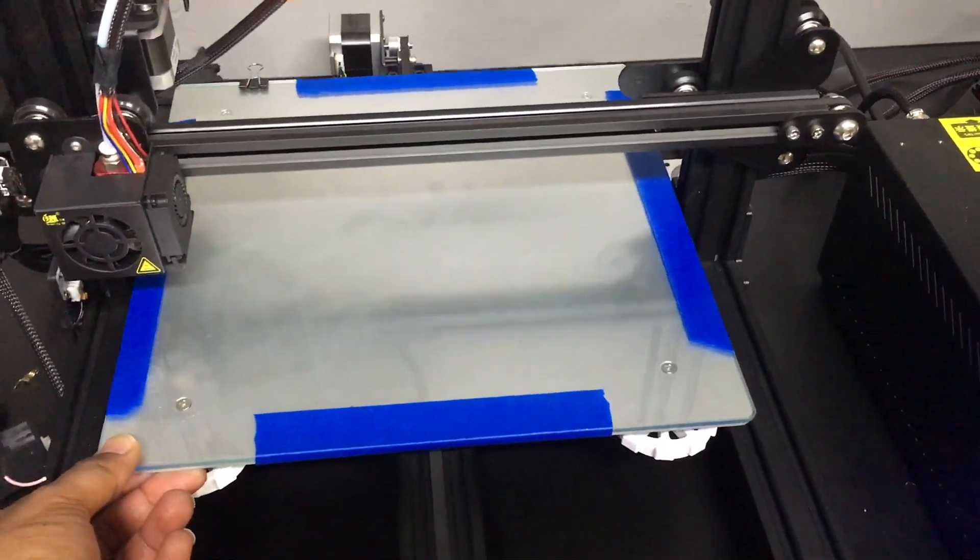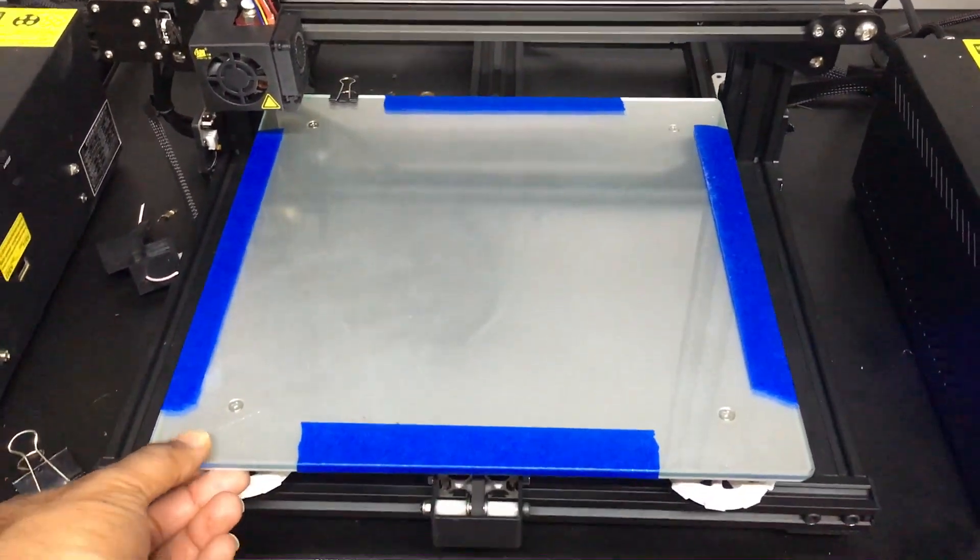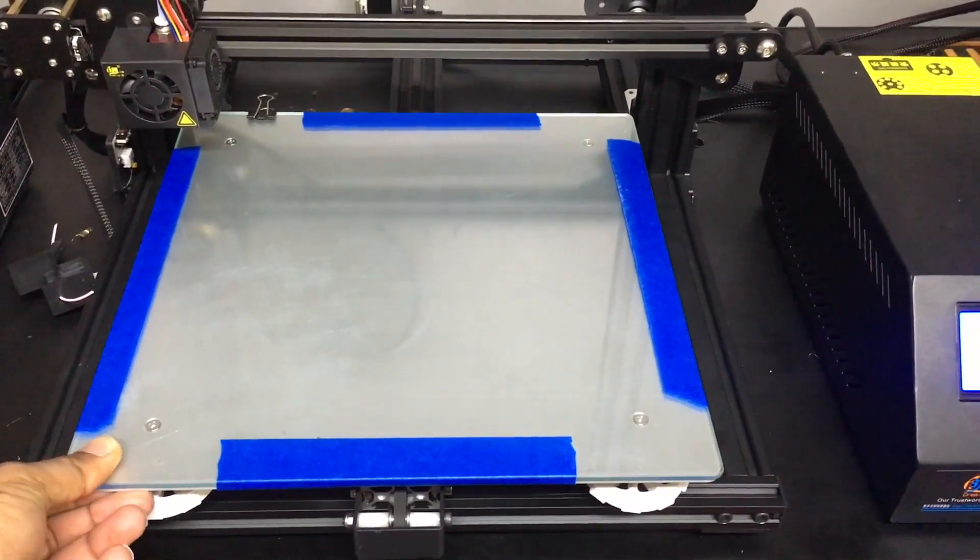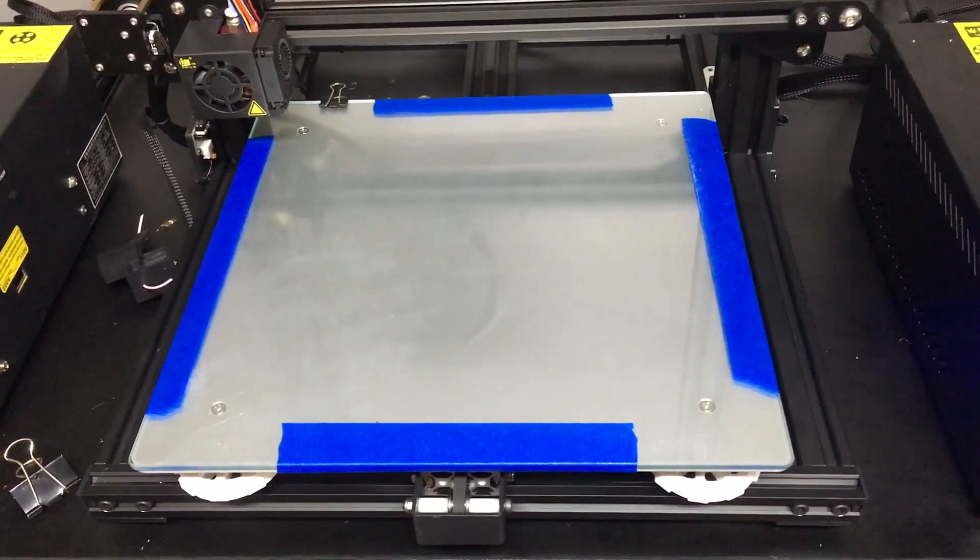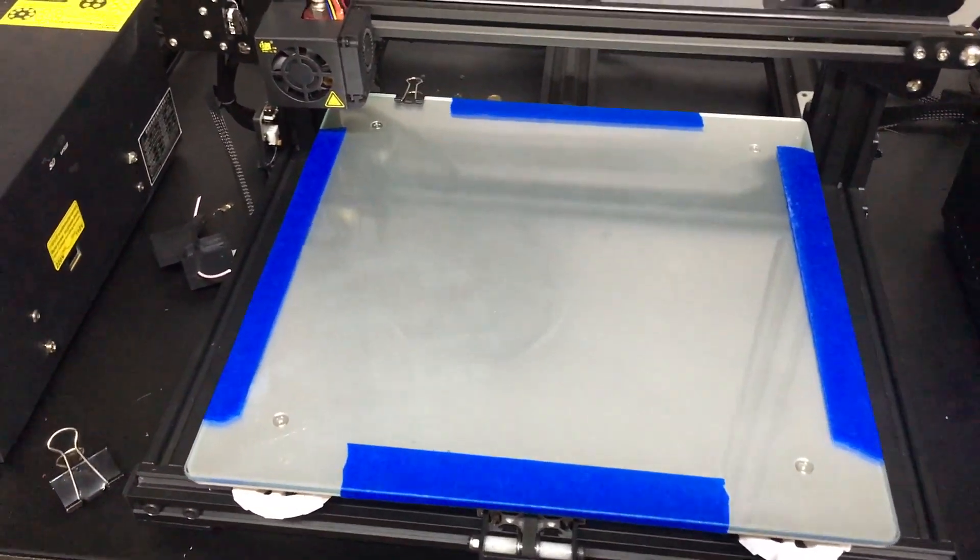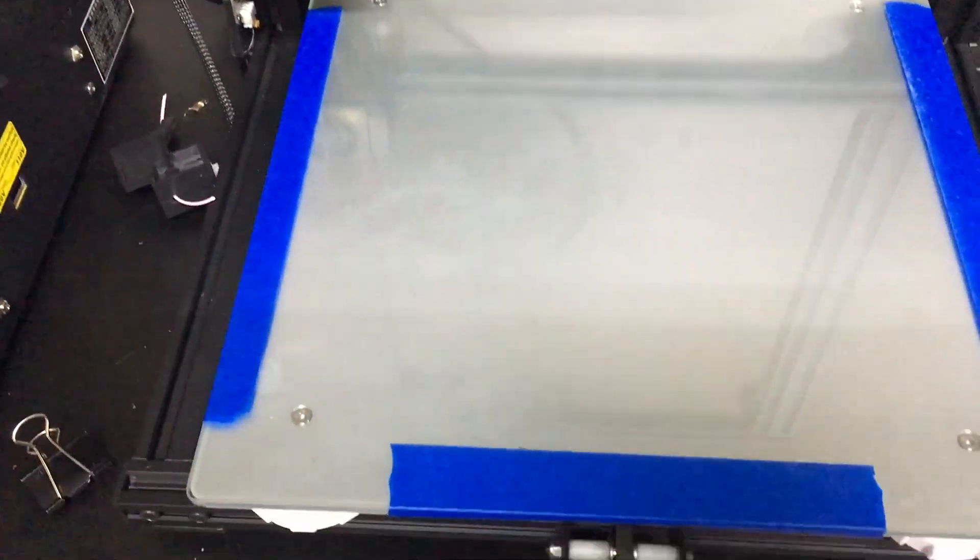Just tape up all four corners. I've been doing this for about a couple of months now. No issue. No shifting. No nothing. My glass stays in place. And if you're concerned about the heat from the bottom of the bed, it does not affect it at all, guys.